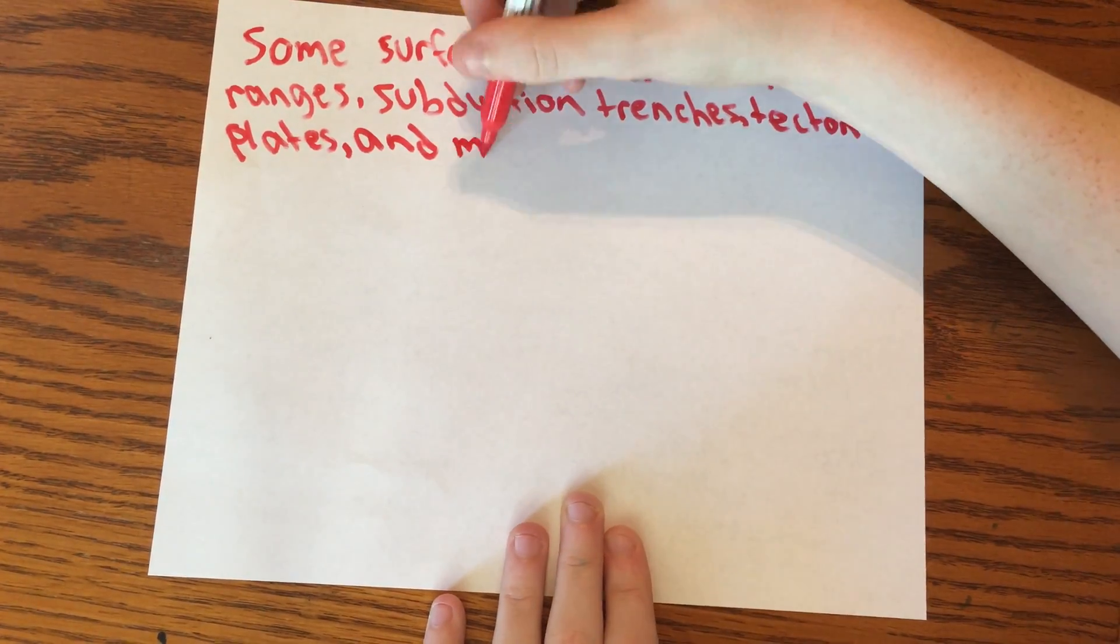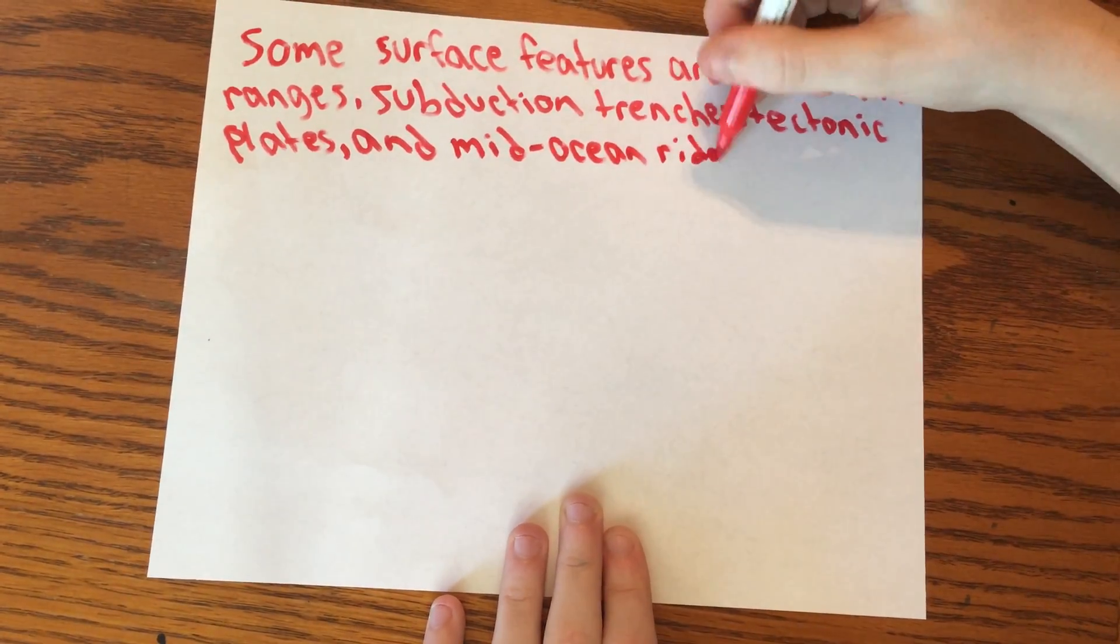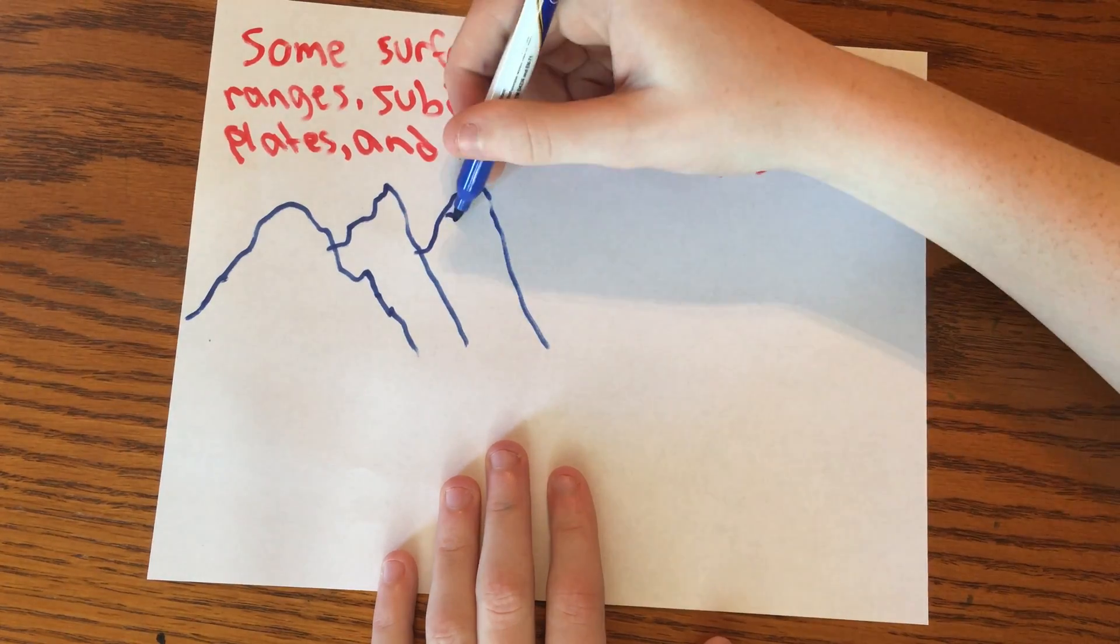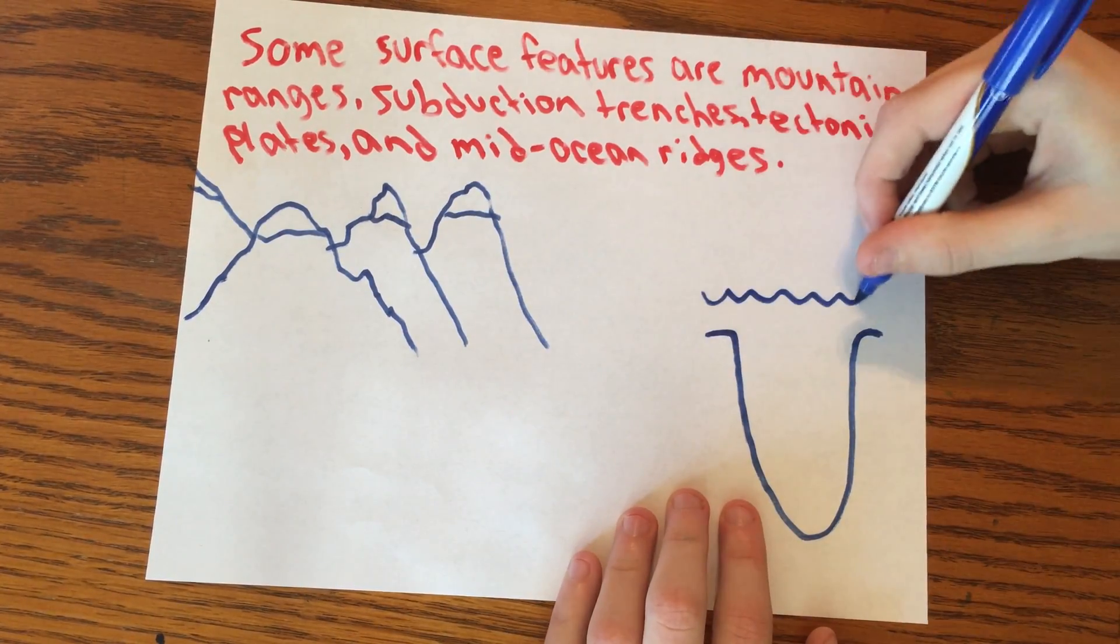Some surface features are mountain ranges, subduction trenches, tectonic plates, mid-ocean ridges, and surface currents.